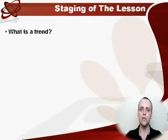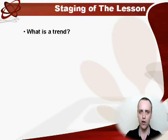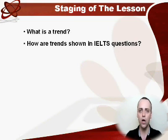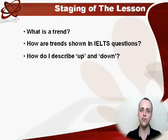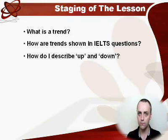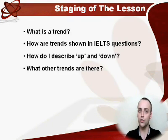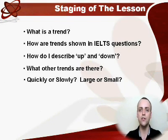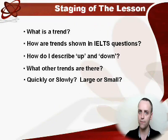How are we going to do that? First of all, we'll look at what actually a trend is. We will have a quick look at how these trends are represented in IELTS — what do we see when we open our test papers for this writing task one? Then I'm going to give you some useful vocabulary to describe movement of trends which go up and down, and we're also going to look at how we describe other types of trends. Then we will look at these trends more closely and how they change — do they change quickly or slowly, in a large way or a small way?